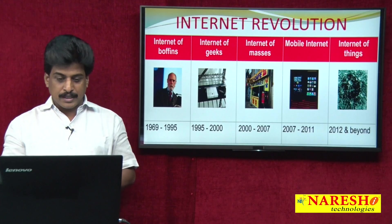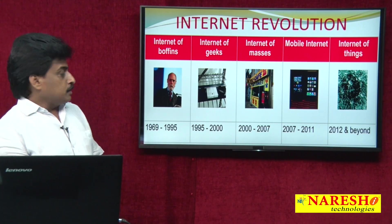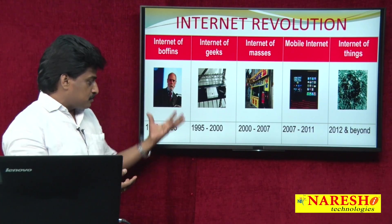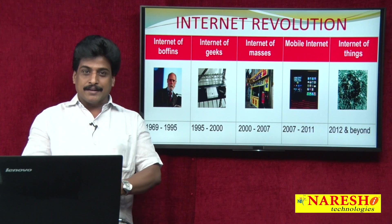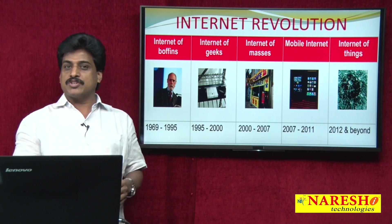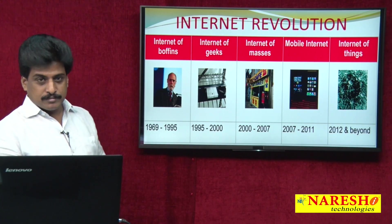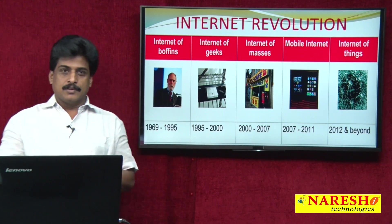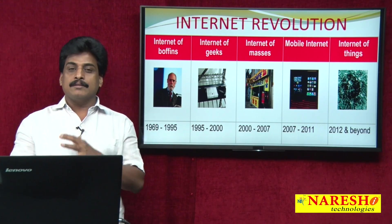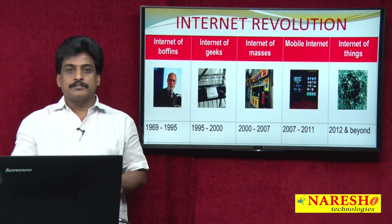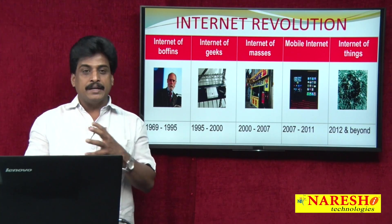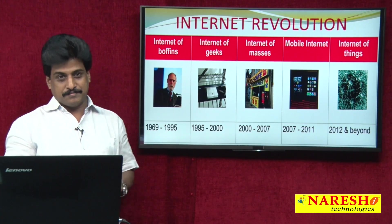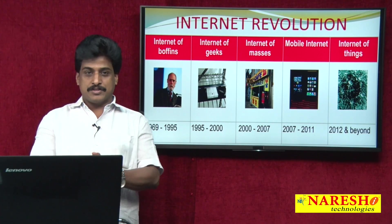Looking at the internet revolution: the father of the internet and early scientists developed what we know as internet — meaning International Network, or a collection of TCP/IP communications protocols. From basic geek usage, the internet evolved to the internet of masses, with everything online, then social media, video communications, and digital media all entering the picture.